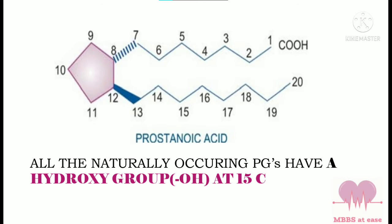For example, PGF2, PGE2, PGI2, PGH2, and thromboxanes have a hydroxyl group at the 15th position. Based on the number of double bonds on the side chains, they are denoted by a subscript after the capital letter — series 1, 2, and 3. In PGE1, PGE2, PGE3, mostly series 2 are naturally occurring.